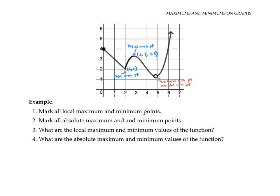Turning our attention to absolute max and min points: there are no absolute max points, as the function keeps going up and up forever. There's also no absolute min point, because the function just keeps going down and down little by little and never actually achieves a lowest value. For local maximum values — that's just the y values of the local maximum points — there's a local max value of 3.3, and there's a local min value of two. There are no absolute max or min values for this function.